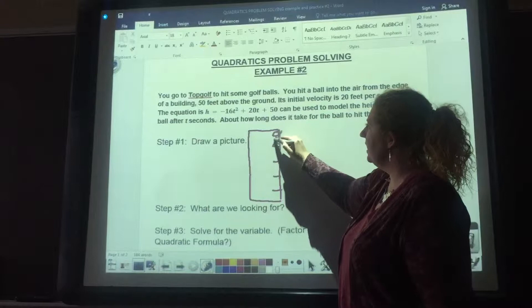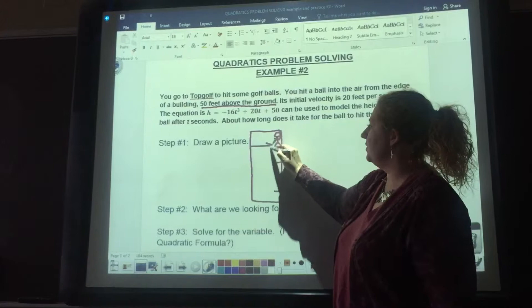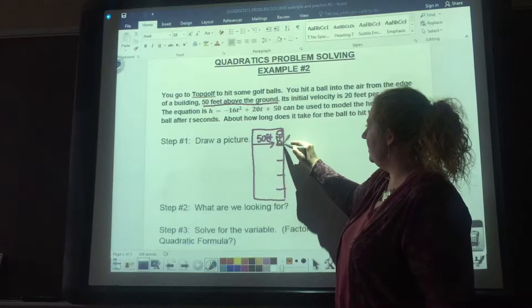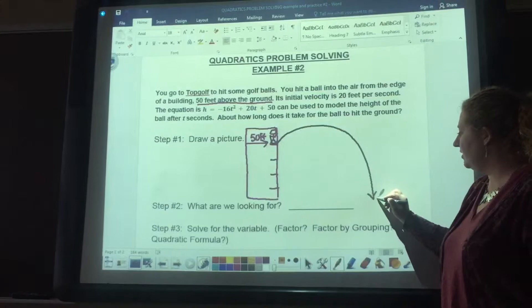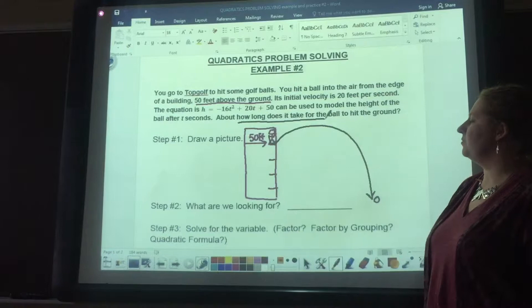Right here, it's showing that you are at 50 feet. You have your golf club in hand, and you hit the golf ball. The golf ball is not going to go straight down, but it's going to have a little bit of a lift to it before it comes back down, creating this parabola-like picture. The golf ball lands right here. Our goal is to see how long it takes for the ball to hit the ground.